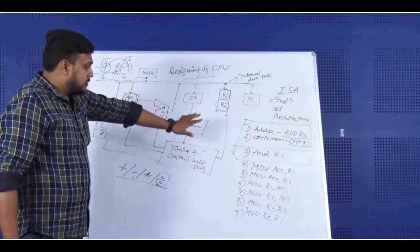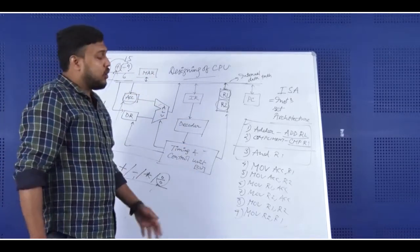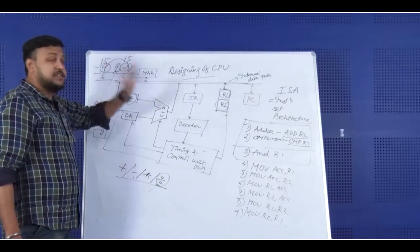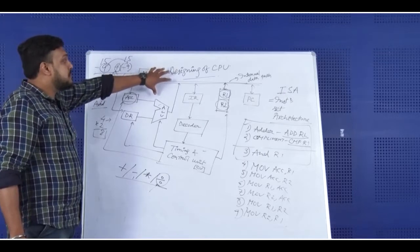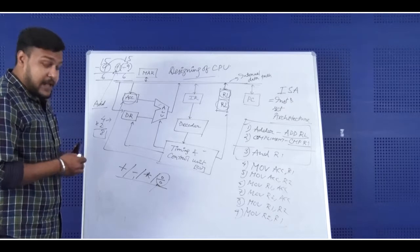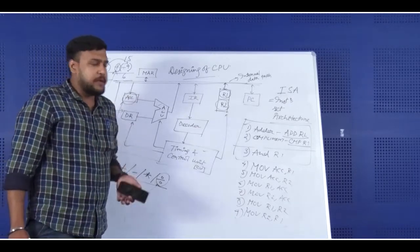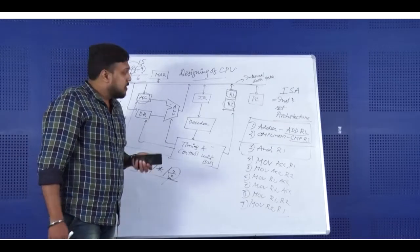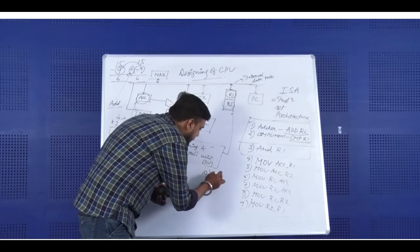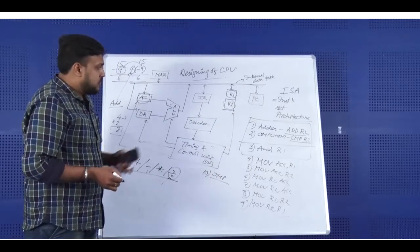Using these operations, we can perform almost all the arithmetic and logical operations needed in any CPU — and this is the most primitive type of CPU. One more operation we need: in high-level language, we use some go-to statement, so we must implement a jump here also. So here we have a jump instruction.